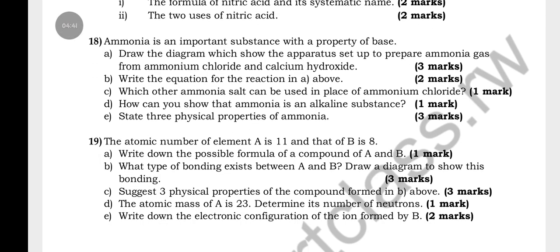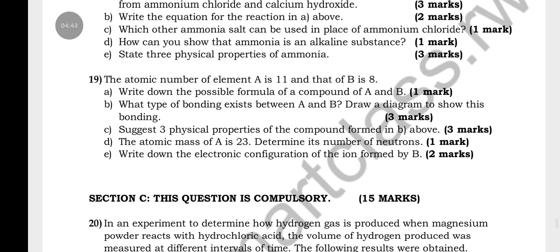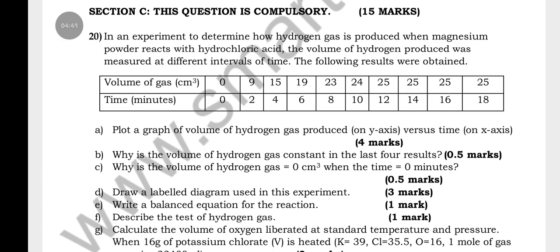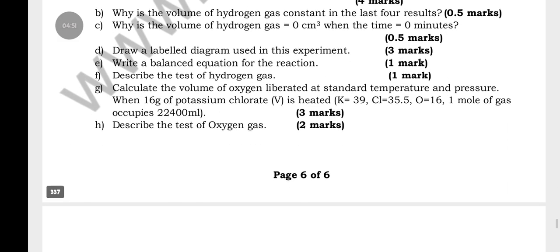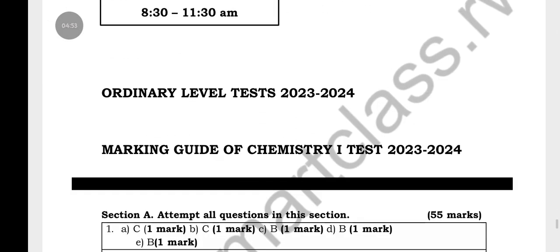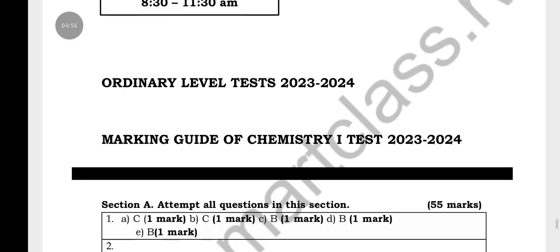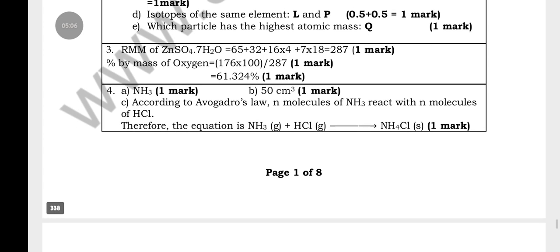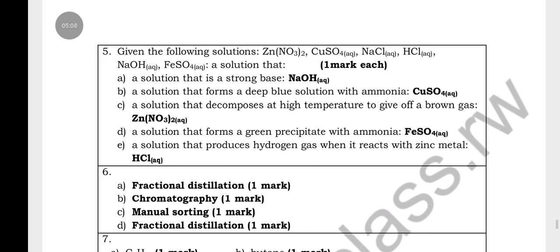Number 17, this is number 18, number 19. You have a compulsory question in Section C, which is the 20th question. Here is its marking guide. Now go through step by step, one by one, so you can see the question and the respective answer.